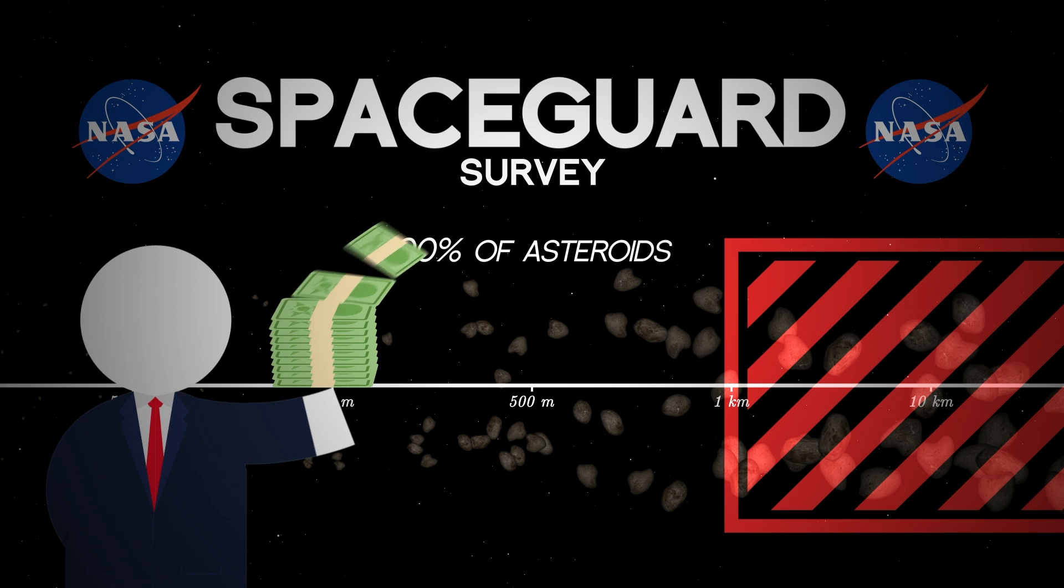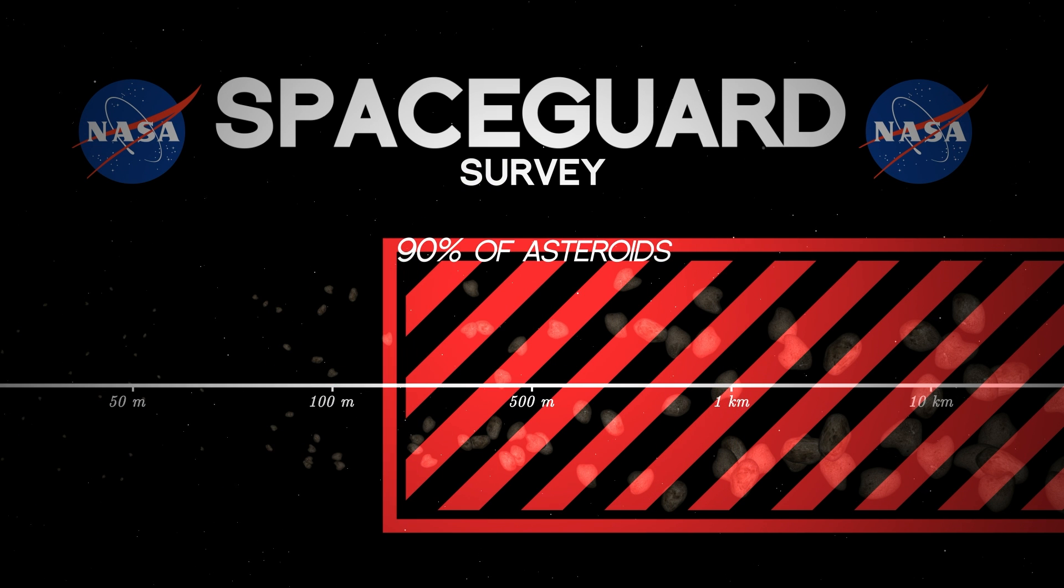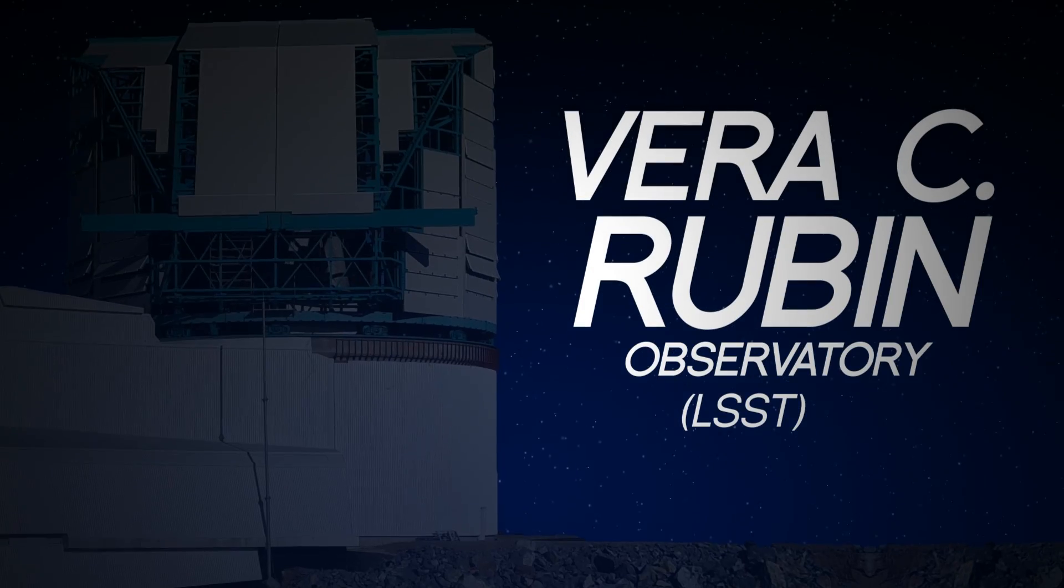Luckily, the US Congress refunded the program, and now it's identifying asteroids greater than 140 meters, a mission in which the Vera Rubin Observatory is participating.